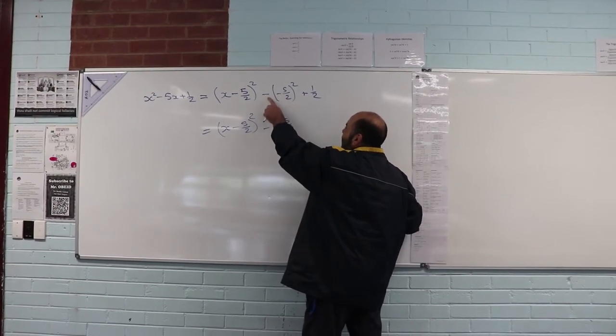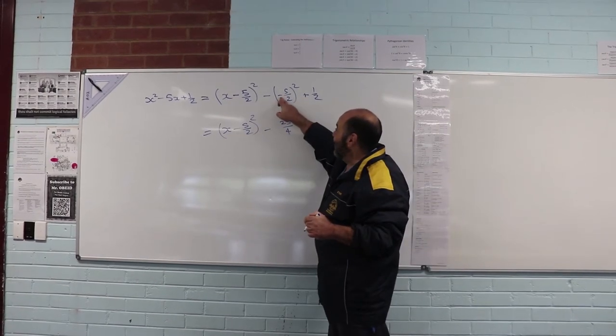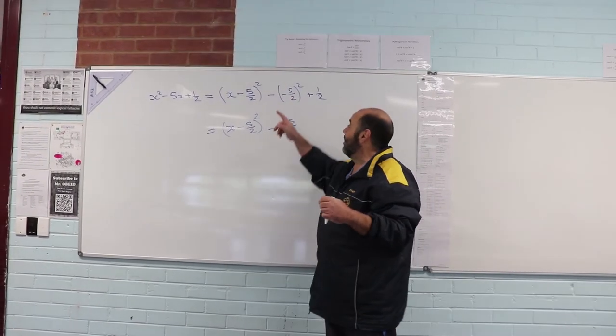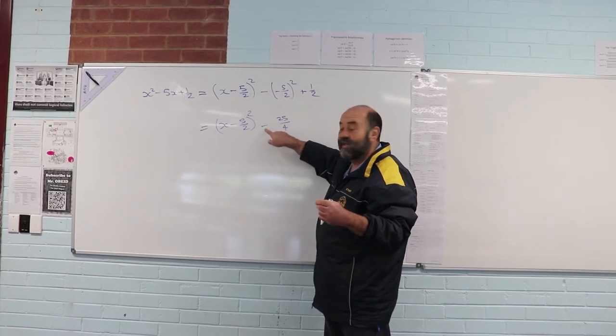Now even though there's two negatives, that negative is being squared. So there's actually three negatives. A negative times a negative times a negative is going to give me a negative over here.